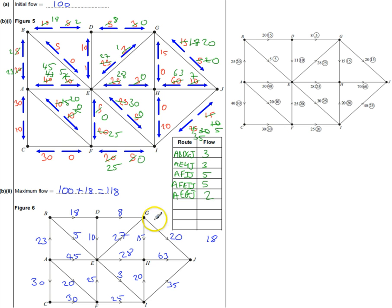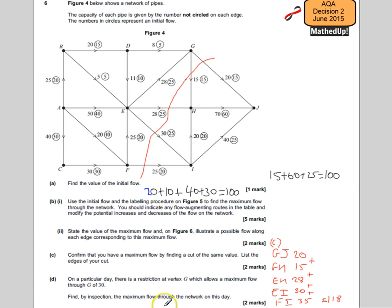If I reduce this to 30, that means there's going to be 5 less coming out. So instead of 20 going down here, there could only be 15. Rather than a flow of 118, because 35 take away 30 equals 5, I now need to reduce this by 5. So 118 take away 5 equals 113. The maximum flow through the network on that particular day is going to be 113.